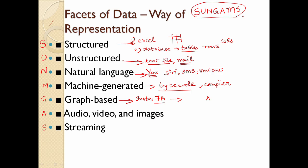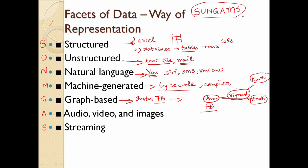For example, Arun is person 1. You can find the friends of Arun — say Vignesh. Who is a friend of Vignesh? Vignesh has friends on Facebook. You can add Karthi and Vinoth to your network because your friend Vignesh's friends are Karthi and Vinoth — that's why you can add them.